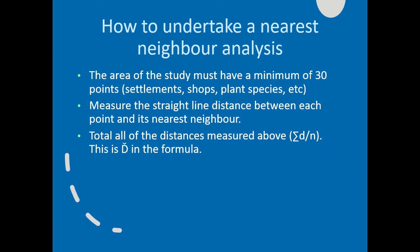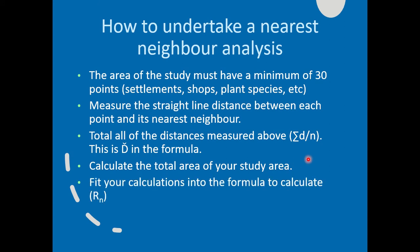You then total all of the distances measured above. That's what that little equation bit there means. Sigma means add them up. So you add up all the distances, and then you divide by the number of dots, which is hopefully a minimum of 30. That gives you the capital D that you see in the formula. Calculate the total area of your study. I think it's important to mention that the distances should be in the same unit of measurement as the area. So if you're measuring distances in metres, then the total area would have to be calculated in metres as well. And then fit your calculations into the formula.